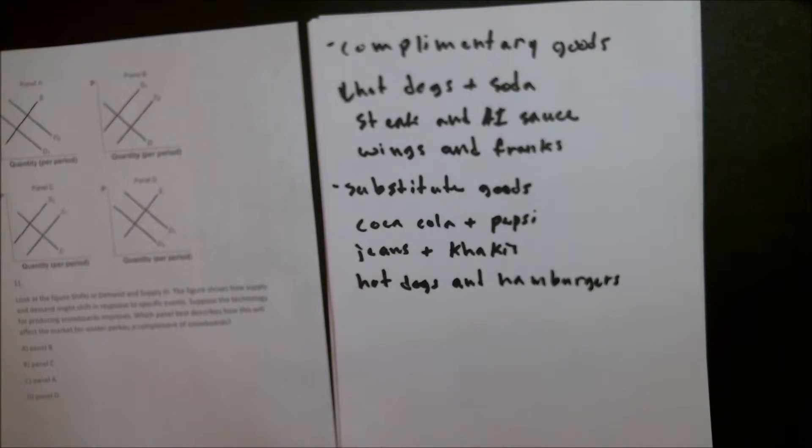Substitute goods are different than complementary goods because substitute goods are something you trade in for each other. Say it costs $5 for a Coca-Cola and $1 for a can of Pepsi. Even if you really like Coca-Cola, you're not going to want to spend that extra $4 for the can, you're just going to go buy some Pepsi because it's so much cheaper. That's the idea behind substitute goods. If the price in one goes up, the demand for the other will also go up because people will stop buying the more expensive good.